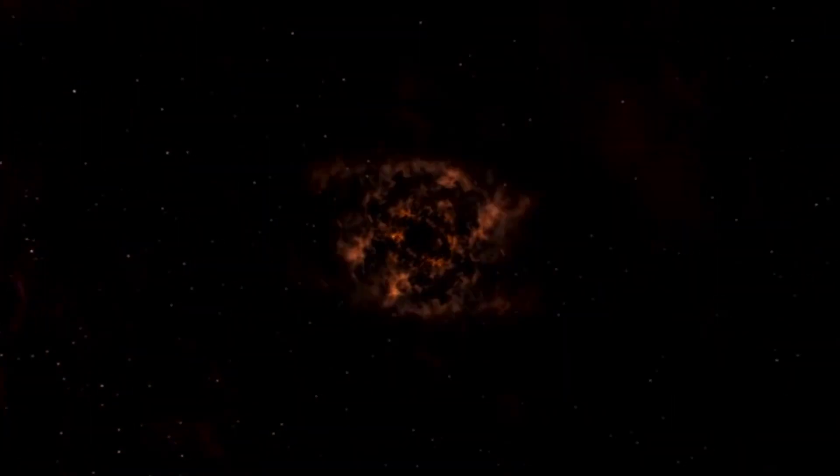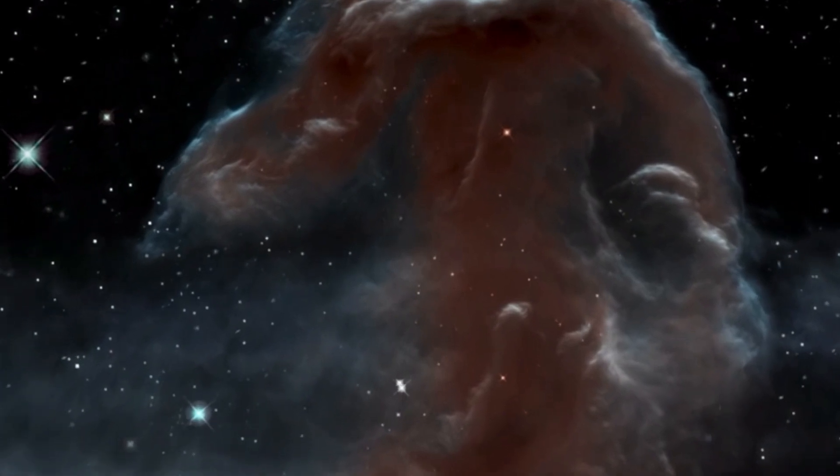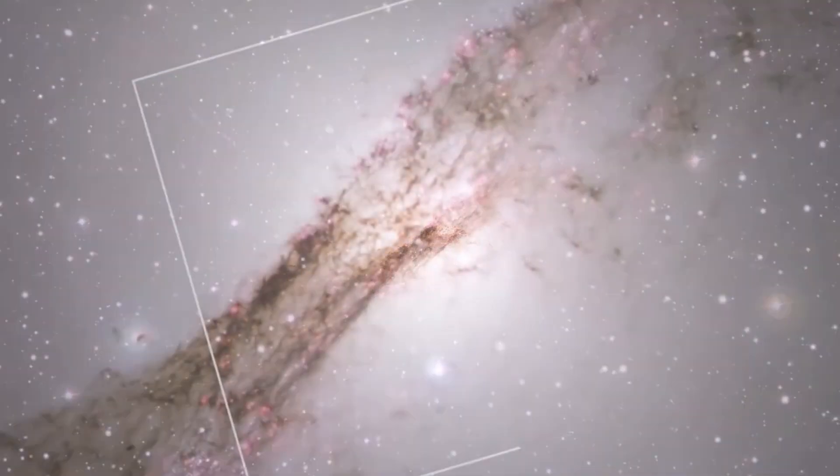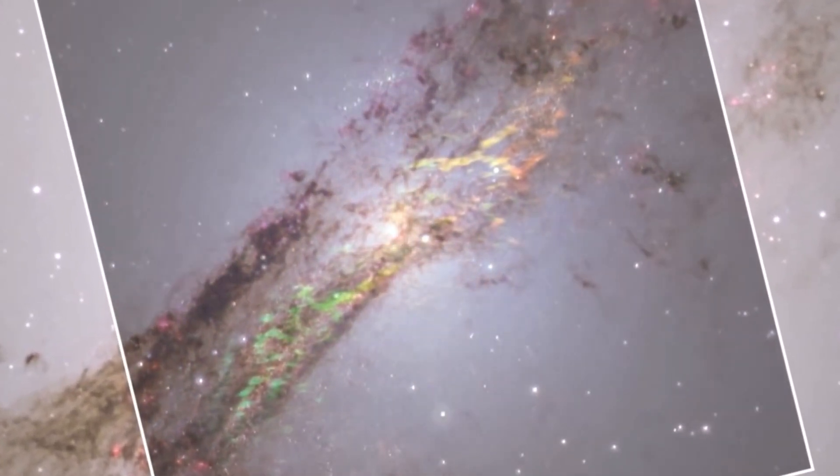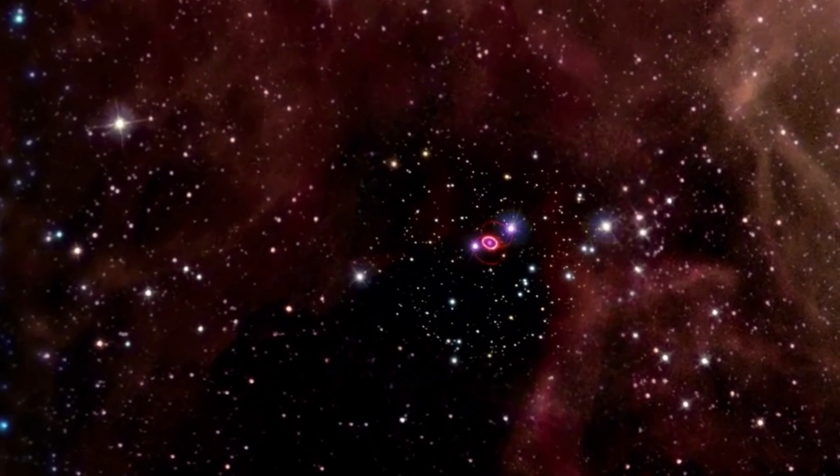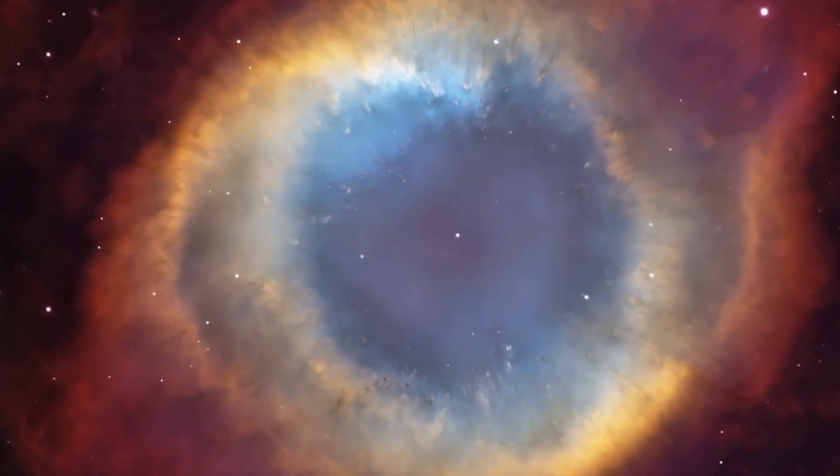According to NASA, the blistering ultraviolet radiation from the young stars is sculpting the nebula's wall by slowly eroding it away. Dramatic pillars tower above the glowing wall of gas, resisting this radiation. The steam that appears to rise from the celestial mountains is actually hot ionized gas and hot dust streaming away from the nebula due to the relentless radiation.